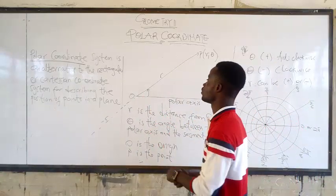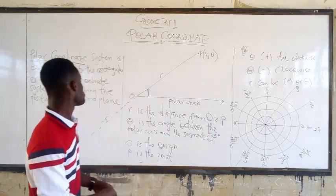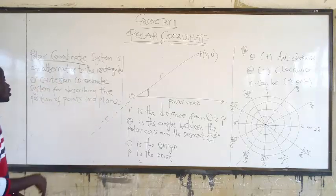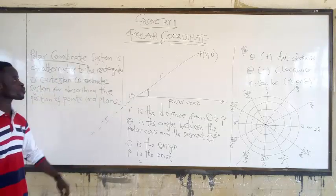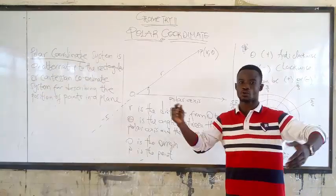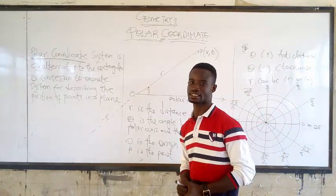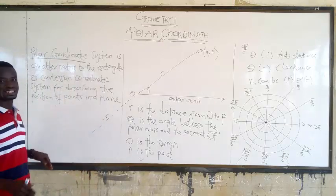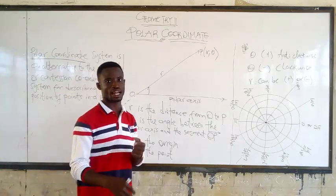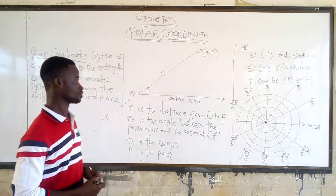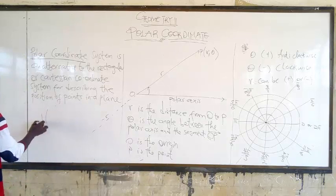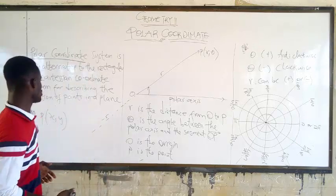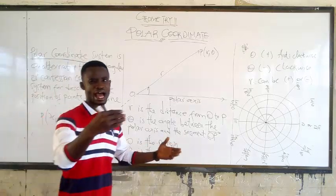When we talk about polar coordinates, the polar coordinate system is an alternative to the rectangular or Cartesian coordinate system — the x-y Cartesian plane. With the Cartesian system, when you are given two points like x and y to plot them, that is your Cartesian coordinate.